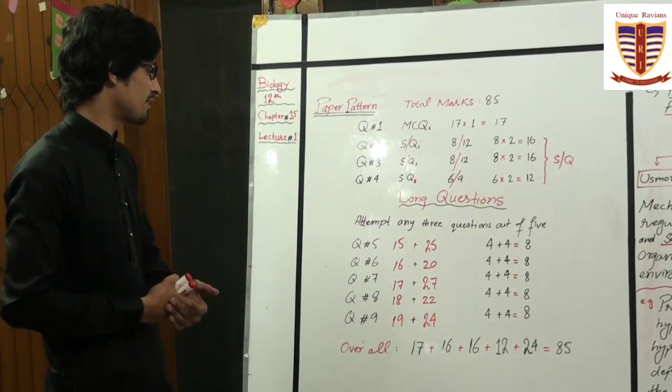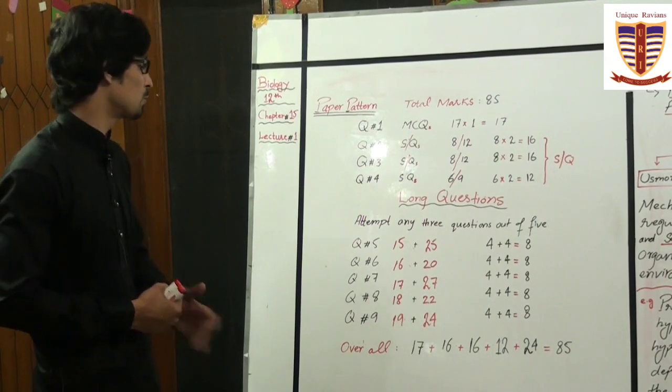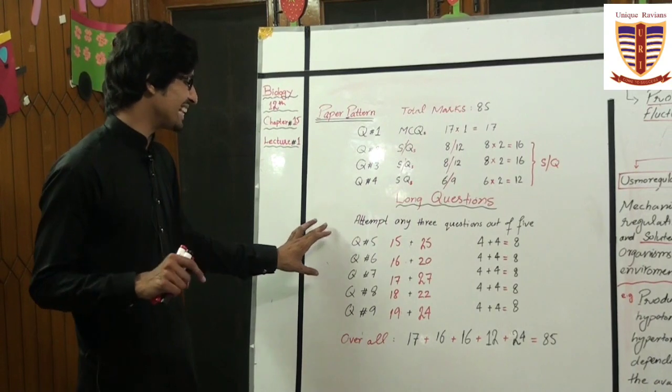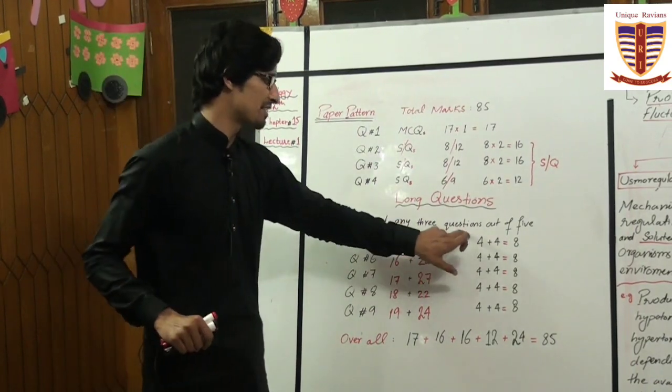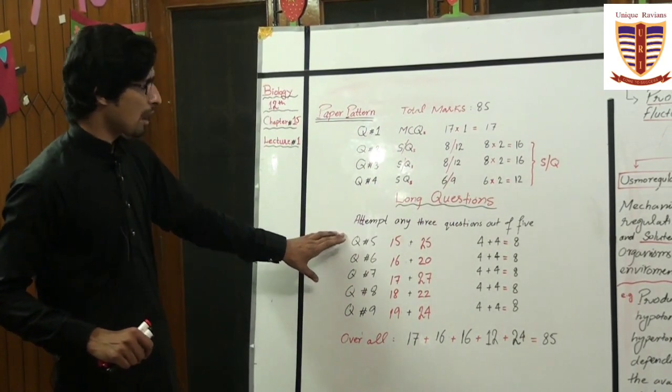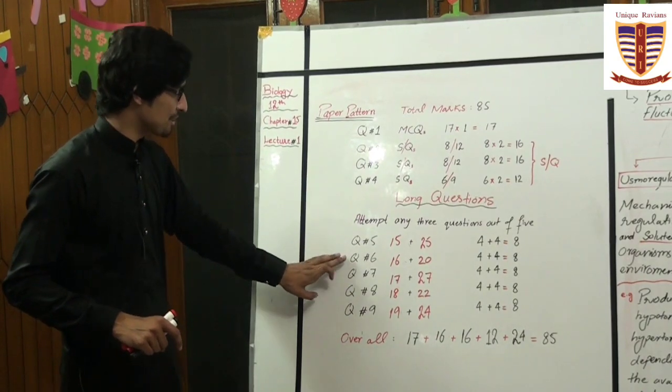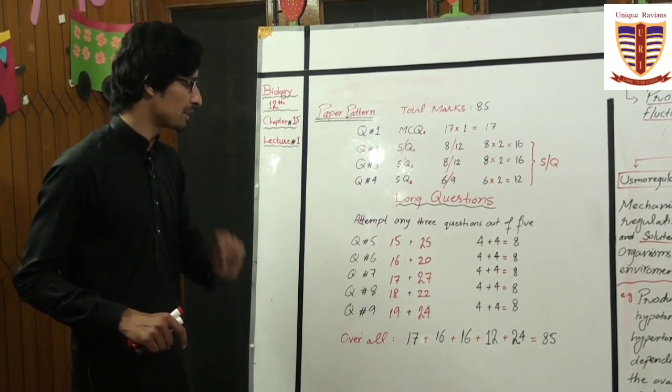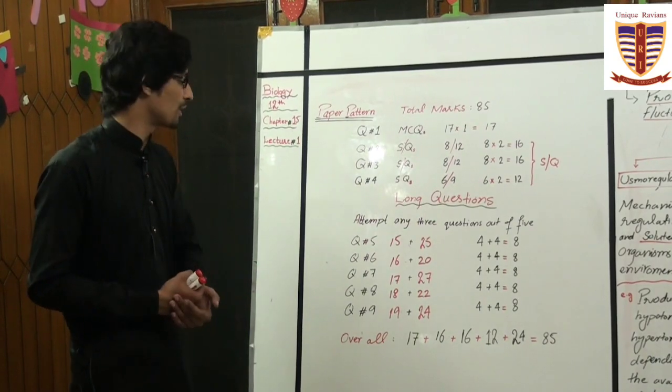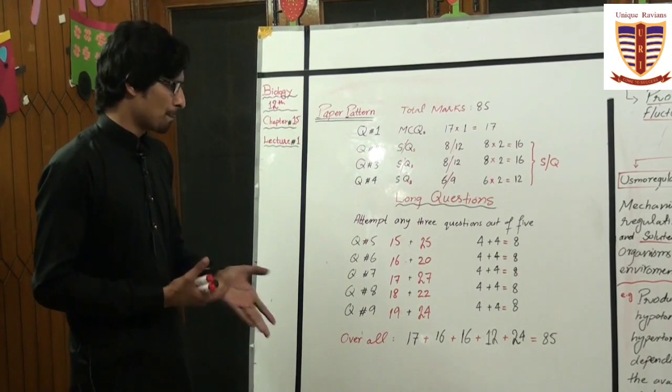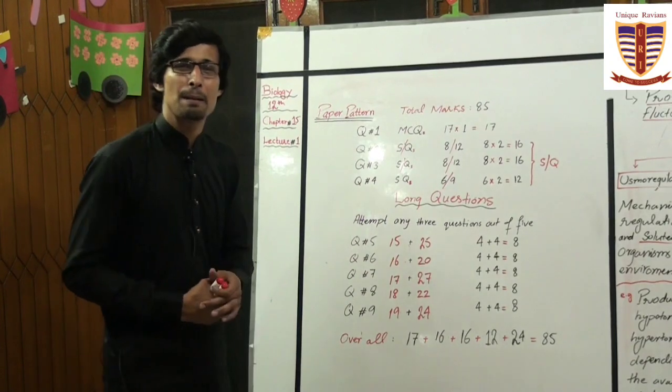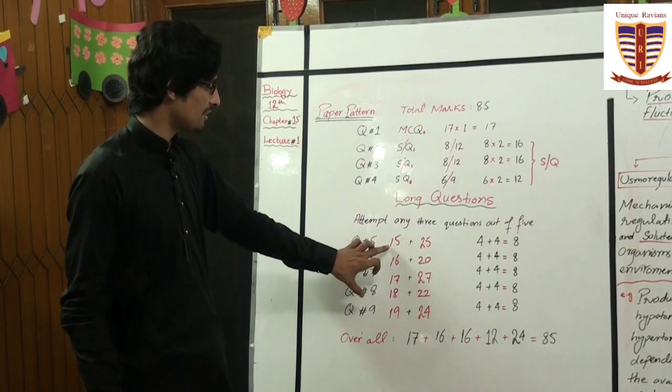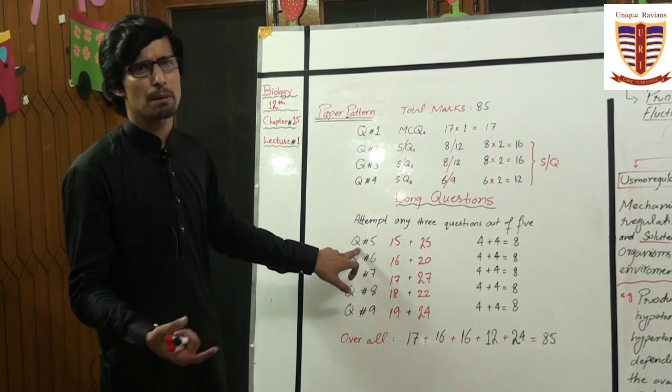After short questions, we have long questions. There are 5 long questions: Question No. 5, Question No. 6, Question No. 7, Question No. 8, and Question No. 9. The board in the past 5 years has used this pairing structure. Question No. 5, which is the first long question, will have 2 parts.